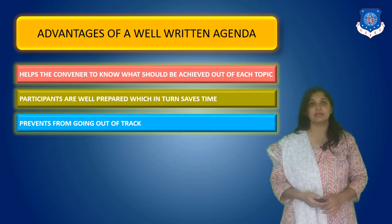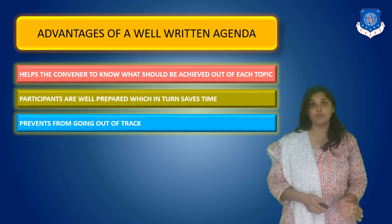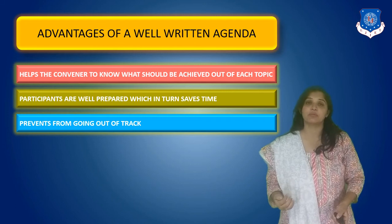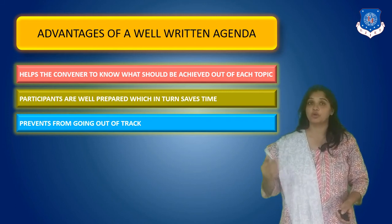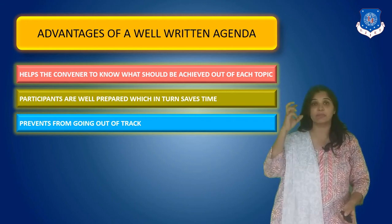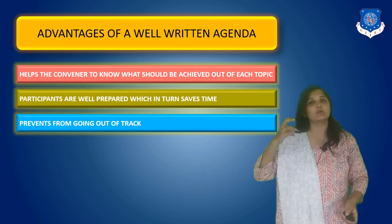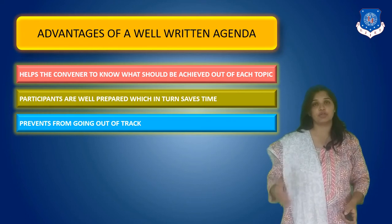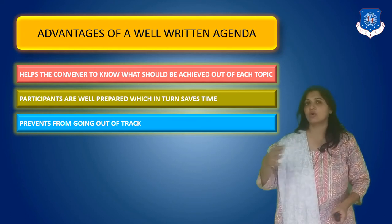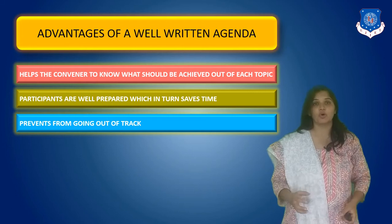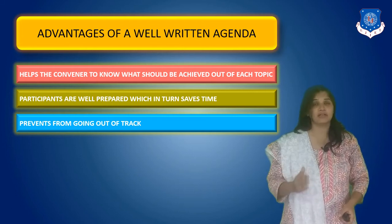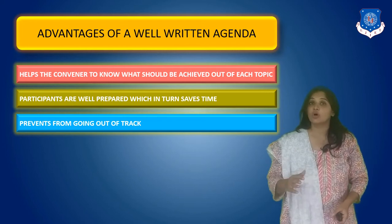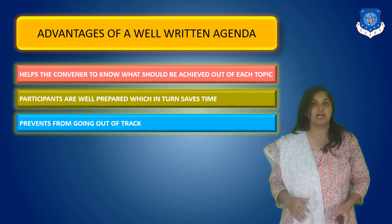The third advantage is that it prevents the meeting from going out of track. When we have a well-written agenda, we have a list of topics to discuss and a particular plan. When we follow that plan, it avoids going off track. The moment the discussion goes out of track, the convener comes to know that this was not included in the agenda and can stop the discussion at that moment. So again it saves a lot of time and energy.